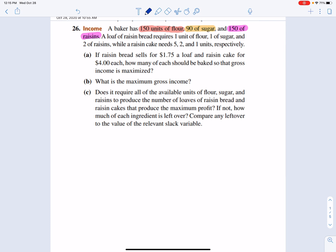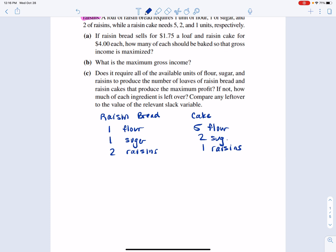So we know that organizing this information, we have raisin bread and we have raisin cake. Who wouldn't want the cake? So a loaf of raisin bread requires one unit of flour, one unit of sugar, and two units of raisins. Raisin cake needs five units of flour, two sugar, and one unit of raisins.